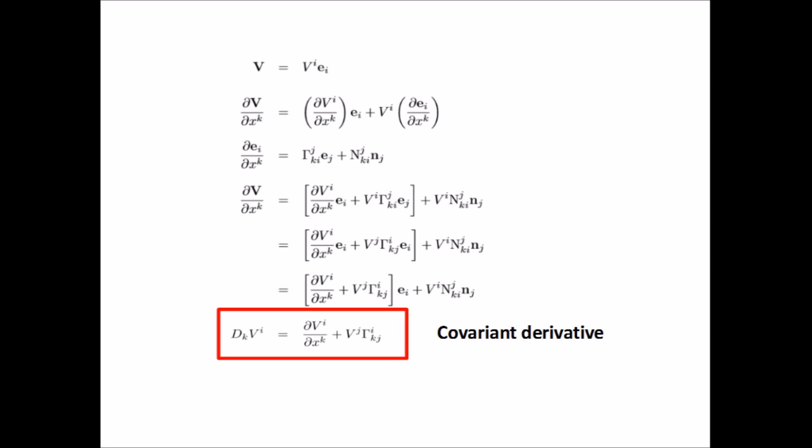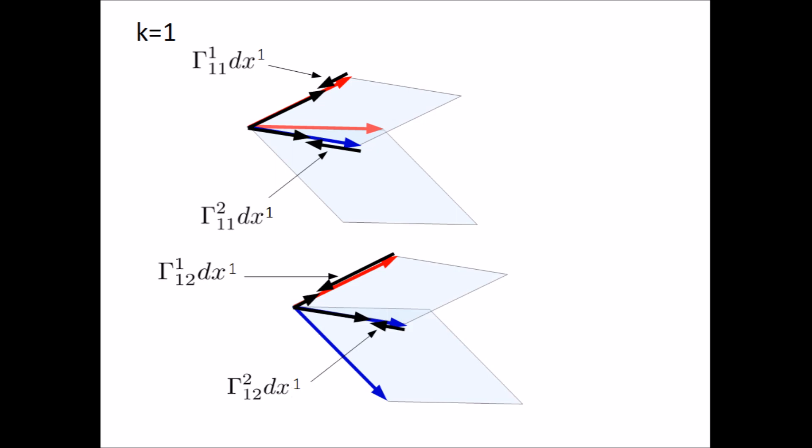The capital gamma is called the Christoffel symbol after the German mathematician and physicist Elwin Bruno Christoffel. The components of the Christoffel symbol have a very simple interpretation. Let's take k equals to 1. The projection of e1 prime onto e1 minus e1 is gamma 1 1 1 dx1. The projection of e1 prime onto e2 minus e2 is gamma 1 1 2 dx1 and similarly for e2 prime.